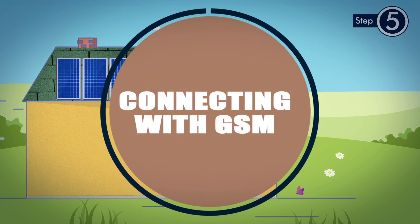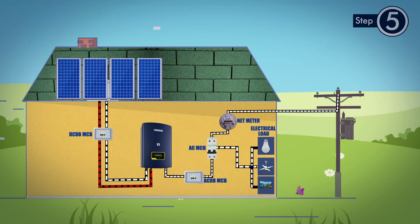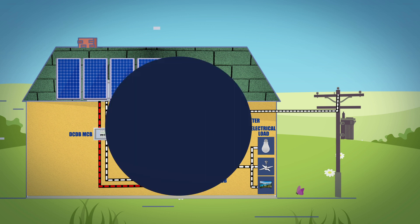Step 5. Connecting with GSM. Once all the electrical connections are done, connect the GSM dongle to the inverter by inserting it properly in the communication port of the inverter. Now, installation is complete.